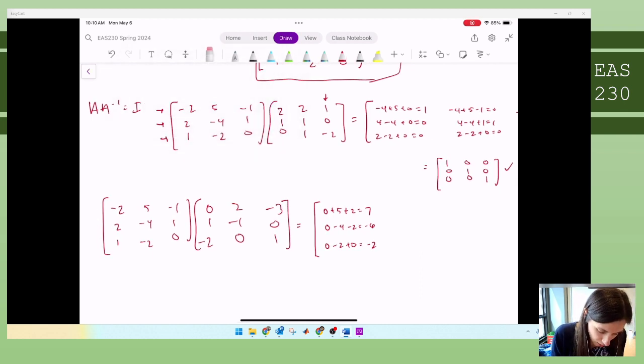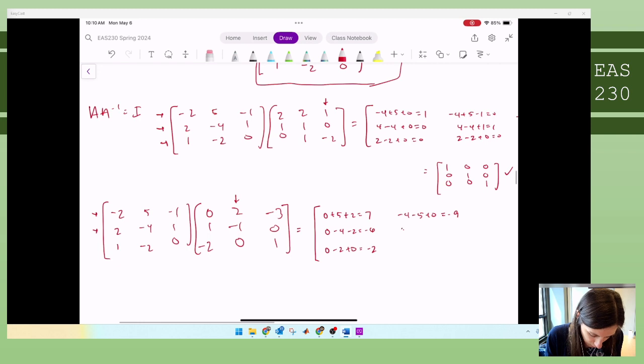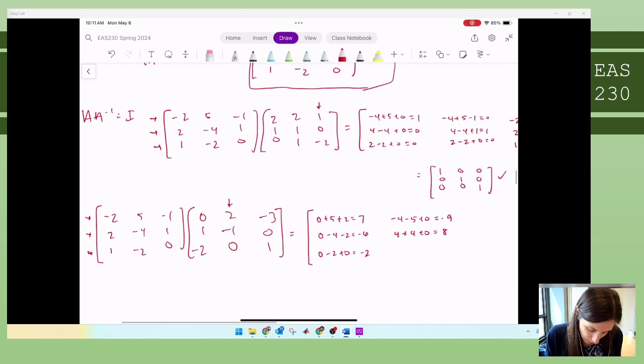Moving on to column two, my second system. Column two, row one, negative four minus five plus zero, negative nine. Row two, four plus four plus zero equals eight. And then row three, two plus two plus zero equals four. And there we go. There's my second system that I've solved for it.